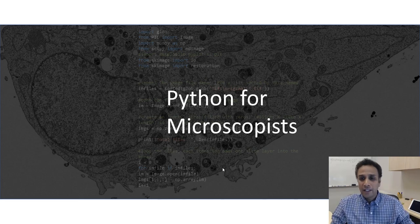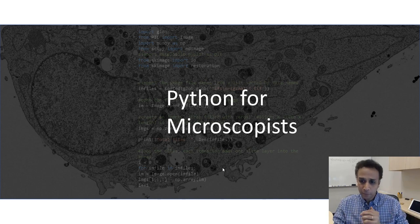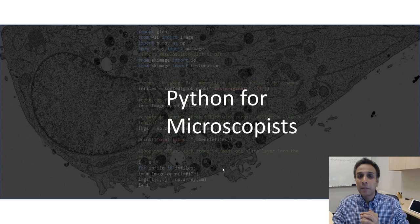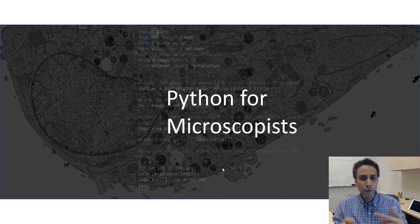Hey guys, this is Srini here, and these are Python basic tutorials on my channel Python for Microscopists on YouTube. These tutorials are for basic to beginner programmers who are students, researchers, or anyone interested in image processing using Python. In the last tutorial we looked at lists and tried multiplying a list by a number, realizing that multiplication of a list by an integer replicates the list that many times. For image processing we need to actually multiply the values inside the list, and that's exactly why NumPy is a great library for these kinds of tasks.